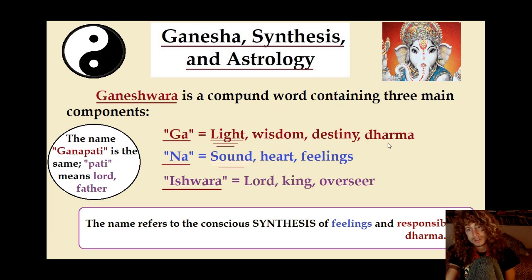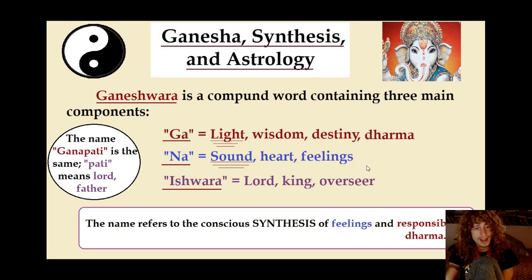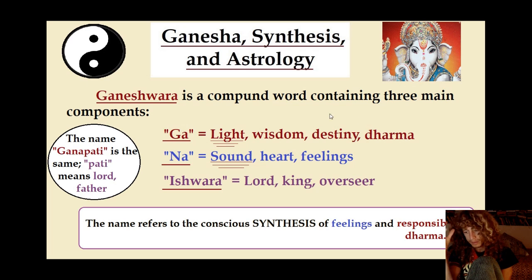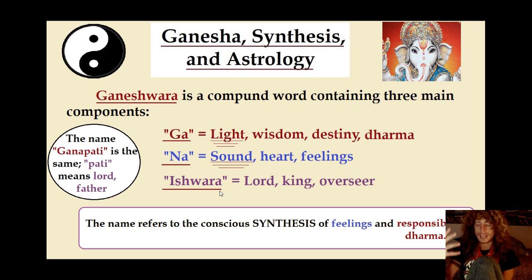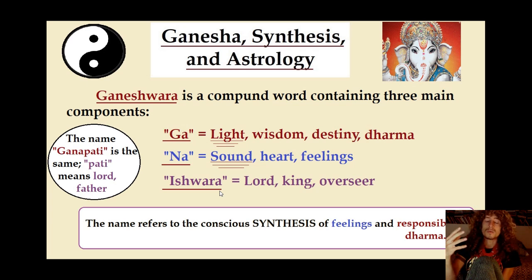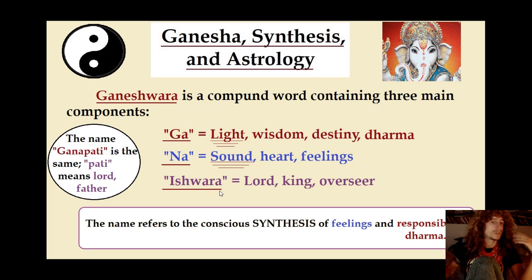Ga is kind of like our eternal dharma, but Na is like the moon. And that's why Ga and Na is yoga — you're combining the eternal with the present moment. And Ishwara is, of course, the Lord, the overseer. It's us. We are the overseer of how we react to Ga and Na coming at us in different ways. We can't always necessarily have them both integrated — we are the leader, we are Indra.